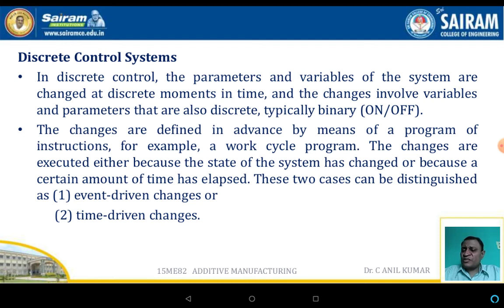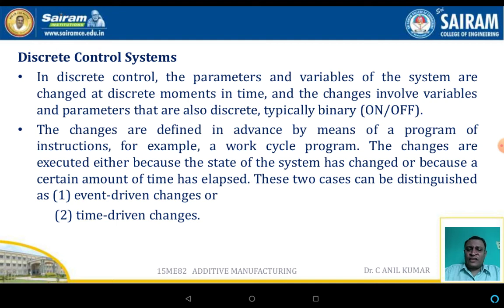Discrete control systems are control systems where the parameters and variables of the system are changed at discrete moments in time. The changes involve variables and parameters, typically by means of on and off switching. The changes are defined in advance by means of program instructions — for example, work cycle programs. The changes are normally executed either because of the state of the system or because a certain amount of time has elapsed.